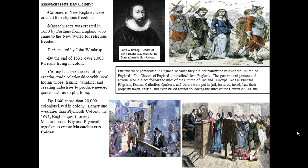The first colony we're going to discuss is the Massachusetts Bay Colony. It was a colony in New England created for religious freedom, just like Plymouth and a couple other colonies we're going to look at. Massachusetts was created in 1630 by Puritans from England who came to the New World for religious freedom. The name Puritan sounds like 'pure' — what they wanted to do was purify the Church of England. They were persecuted in England because they did not follow the rules of the Church of England, which was the second most powerful force after the king and the government.